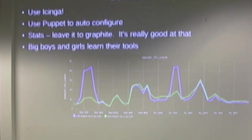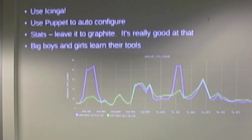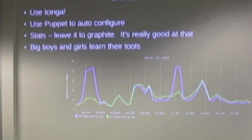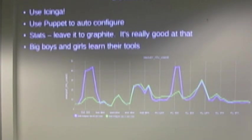So the solutions are use Echinga. Use Puppet to configure Echinga. Take the stats and leave them to Graphite. That's what Graphite's good at. Don't try and put it together with monitoring. The other nice thing about keeping these separate is if there's a problem, you just turn off Stats to Collection. Let your monitoring work. You don't have to have them two tied together. You need monitoring all the time. Stats, they can go away occasionally. Sorry, Tarna. You can say that out loud. And then, you know, big boys and girls learn how to use their tools.